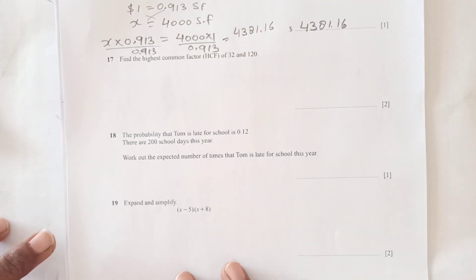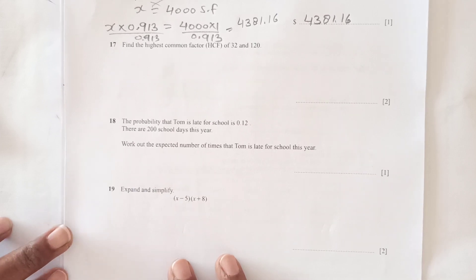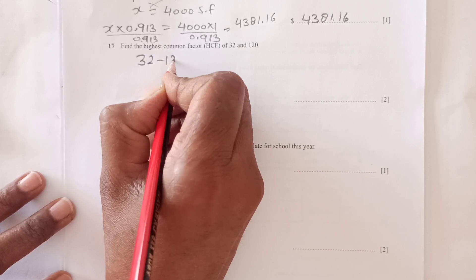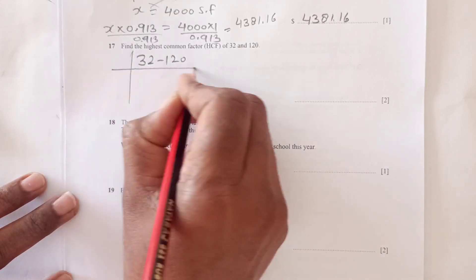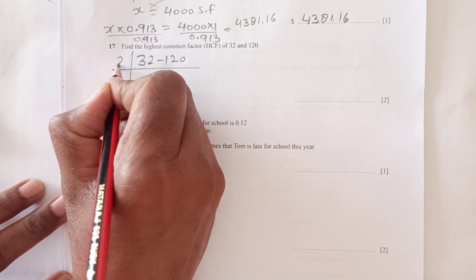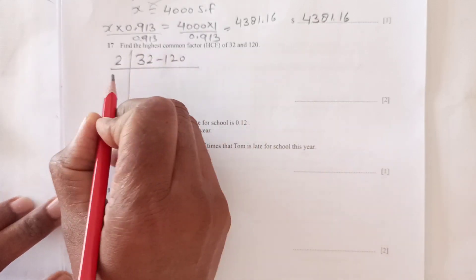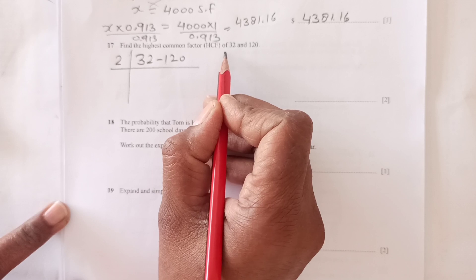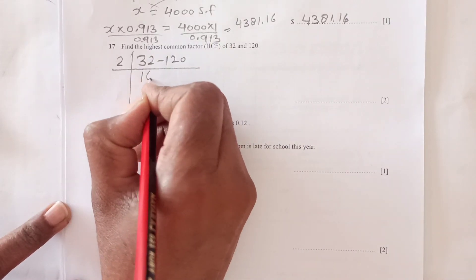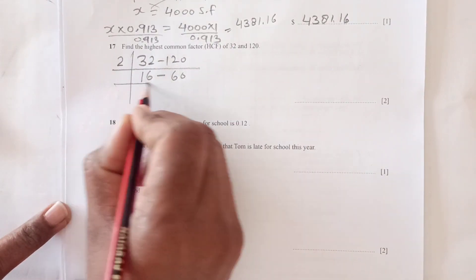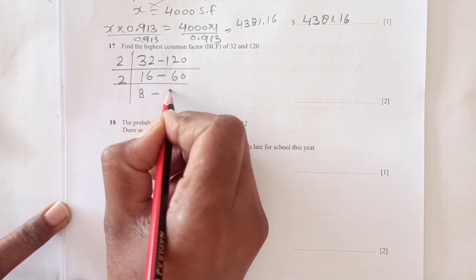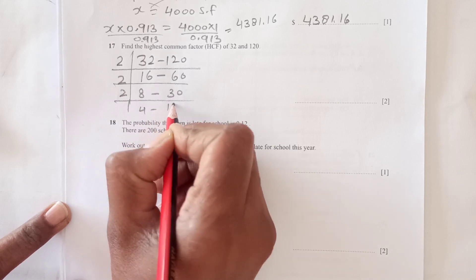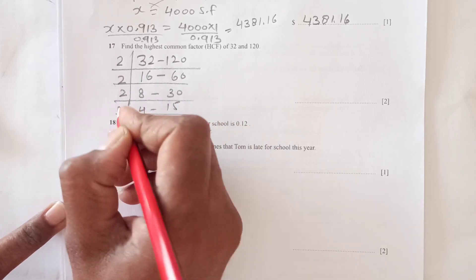Find the highest common factor of 32 and 120. We will use the division method, taking the number that divides both of them. Starting with 2, we get 16 and 60.